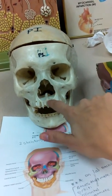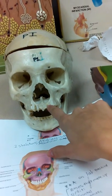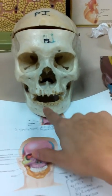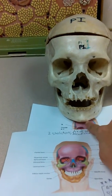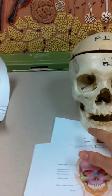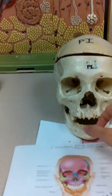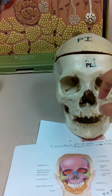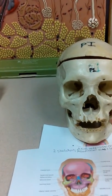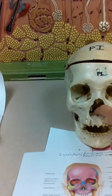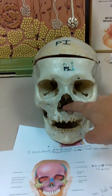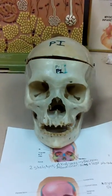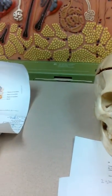Here is the nasion, the vomer, and the maxilla. Then we have the mandible and the zygomatic — the cheek bone. The nasion is here, and inferior nasal conchae are in here. We also have the supraorbital structures.